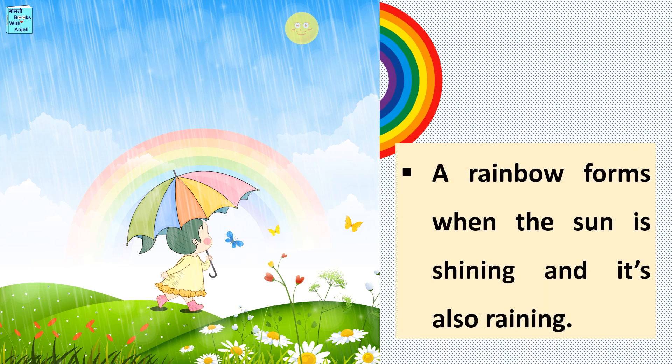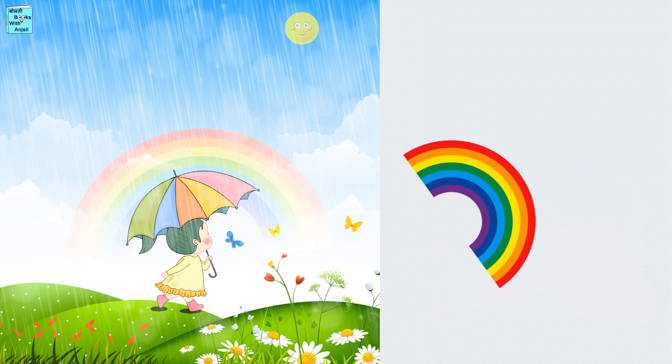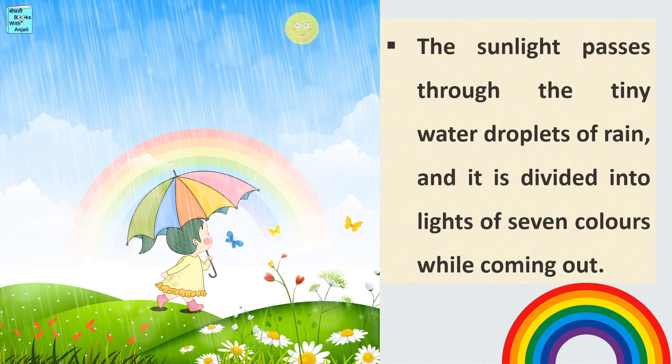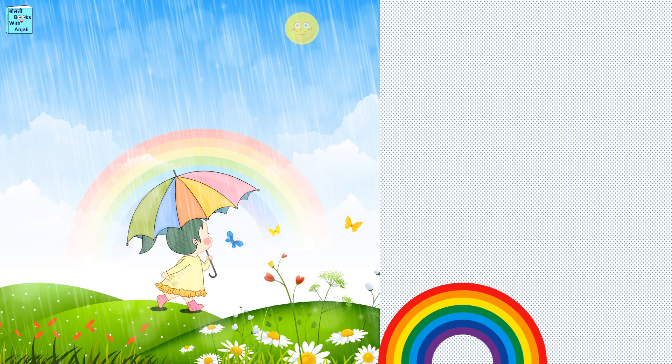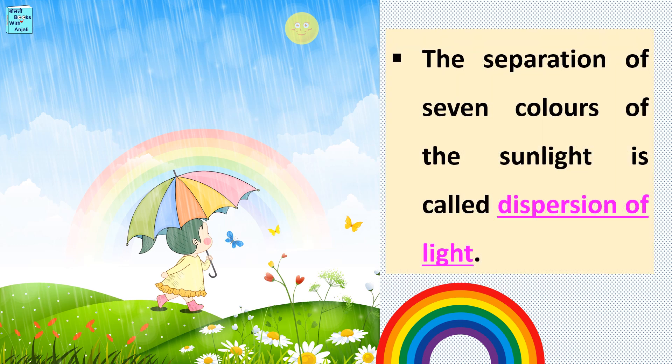A rainbow forms when the sun is shining and it's also raining. The sunlight passes through the tiny water droplets of rain and it is divided into lights of seven colors while coming out. The separation of seven colors of the sunlight is called dispersion of light.